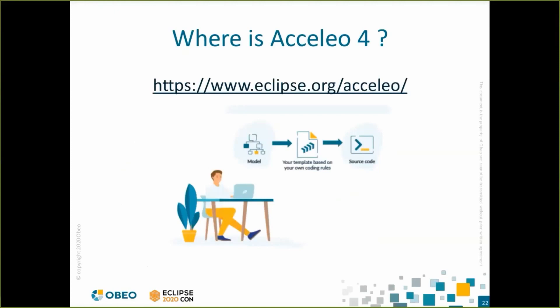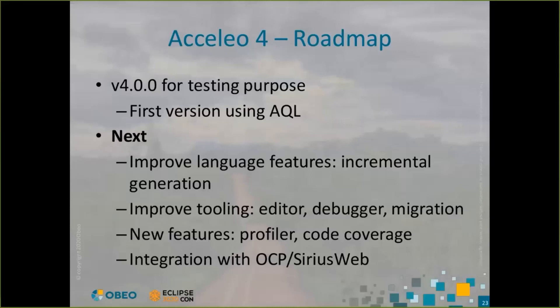You can find Acceleo 4 on the Eclipse project page at eclipse.org/acceleo. Acceleo 4 is out for the community to test — it's the first version including AQL. We want to improve the language with incremental generation, add tooling like a profiler and code coverage tool, and of course we plan to integrate with Obeo Cloud Platform and Sirius Web.